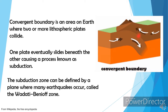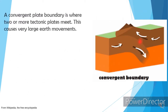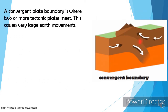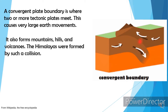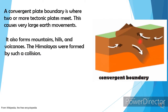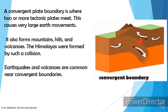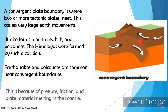A convergent plate boundary is where two or more lithospheric plates meet, causing very large earth movements. It also forms mountains, hills, and volcanoes. The Himalayas were formed by such a collision. Earthquakes and volcanoes are common near convergent boundaries because of pressure, friction, and plate material melting in the mantle.